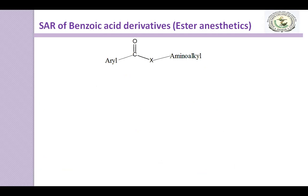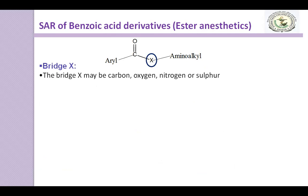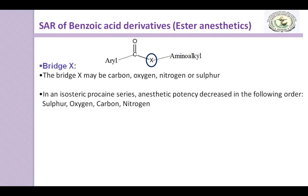The bridge X may be carbon, oxygen, nitrogen, or sulfur. In an isosteric procaine series, anesthetic potency decreases in the following order: sulfur, oxygen, carbon, and nitrogen. So if the bridge is sulfur, it produces more action and the potency is highest, followed by oxygen, carbon, and nitrogen.